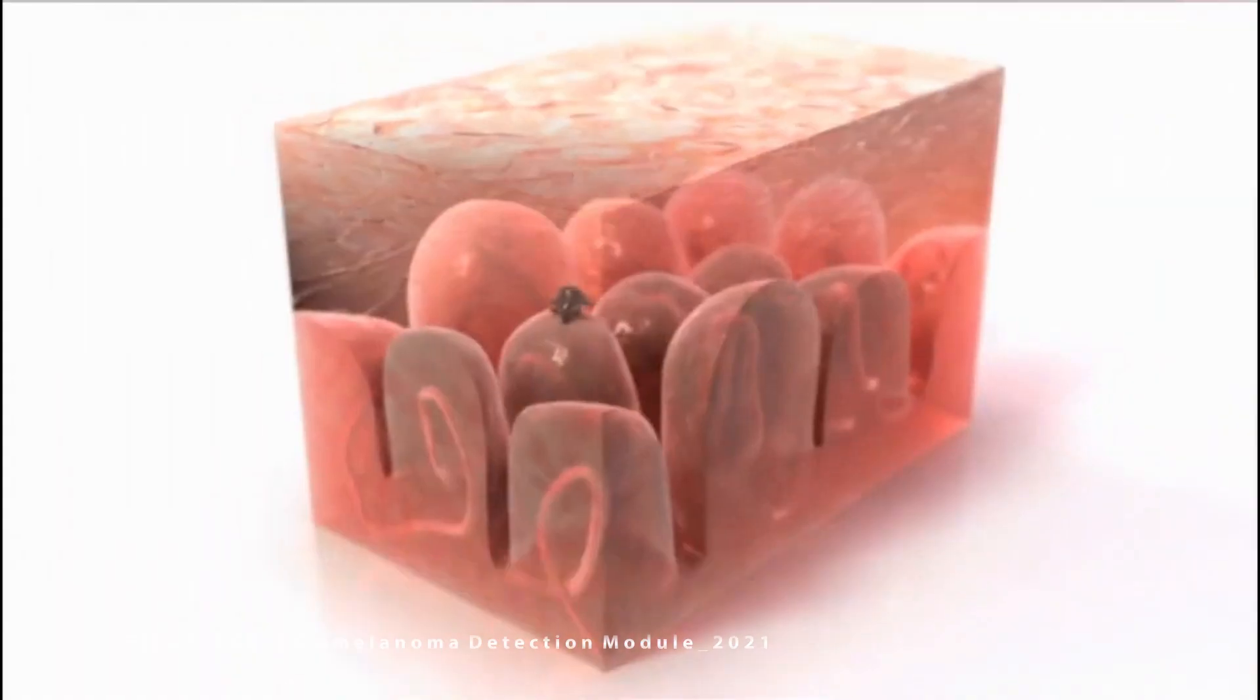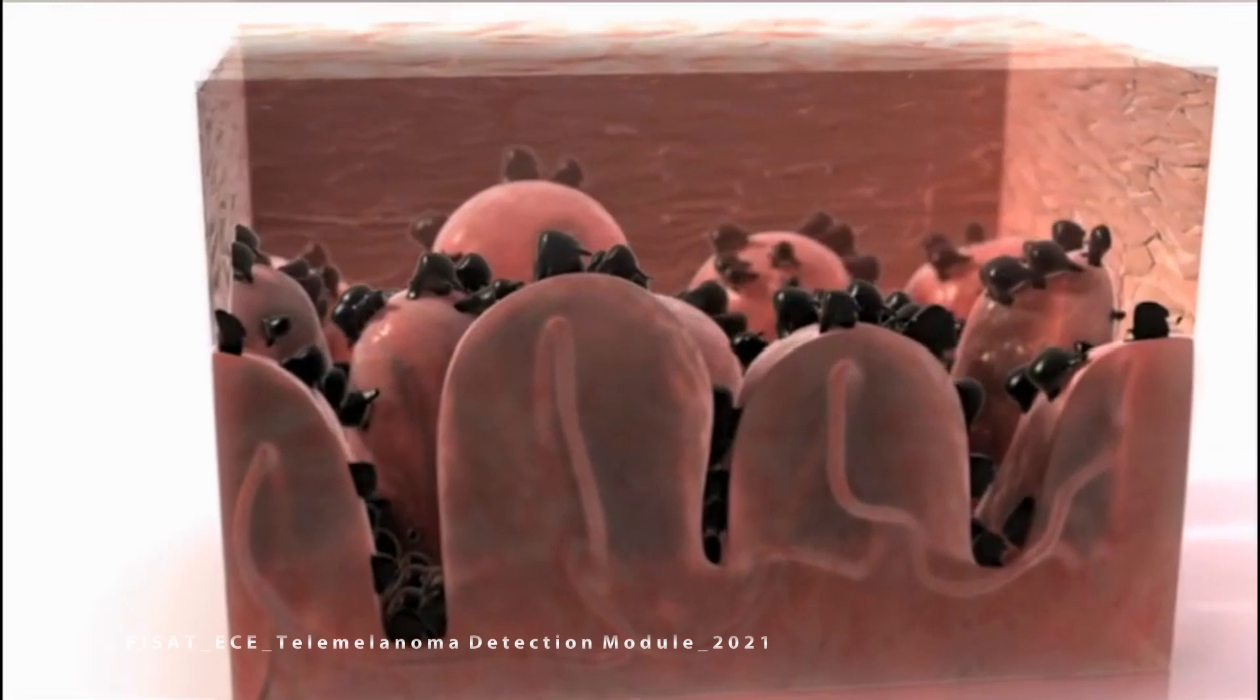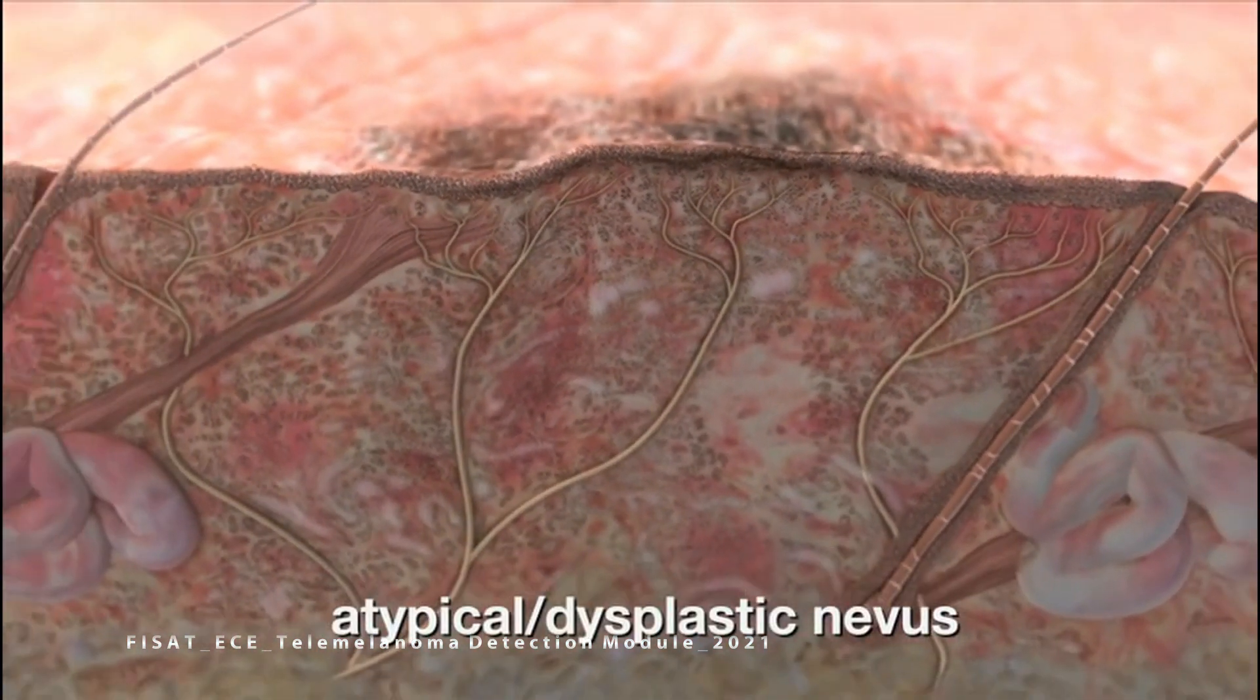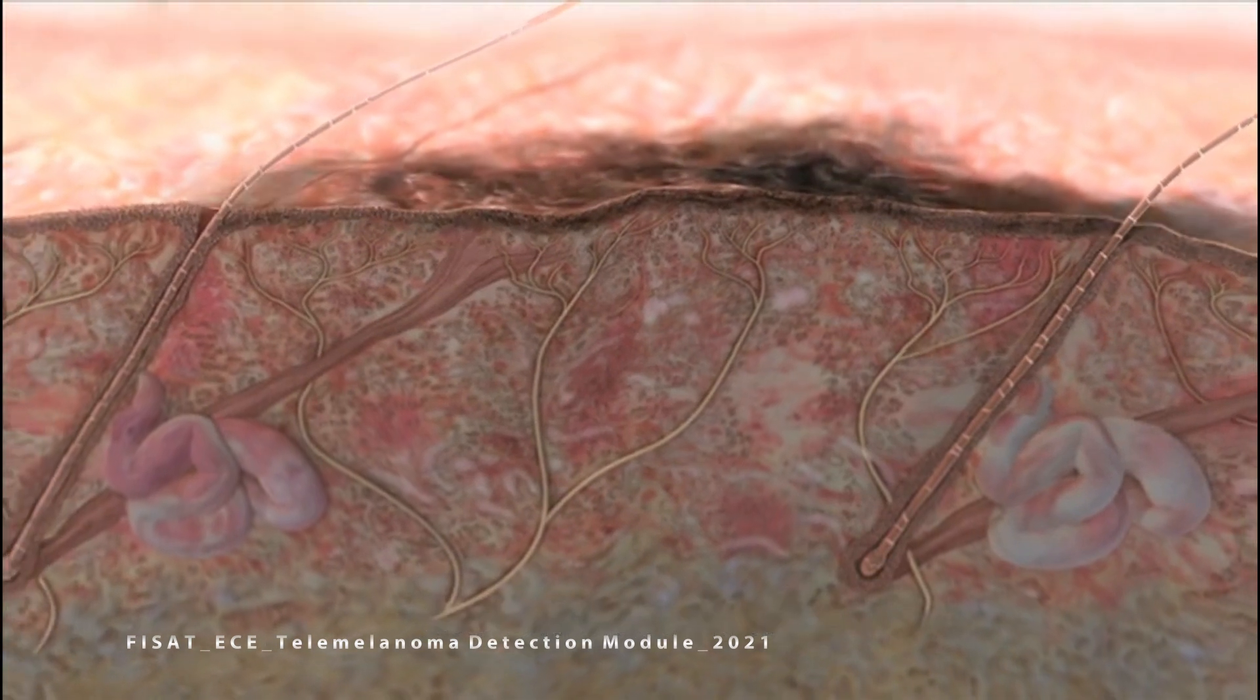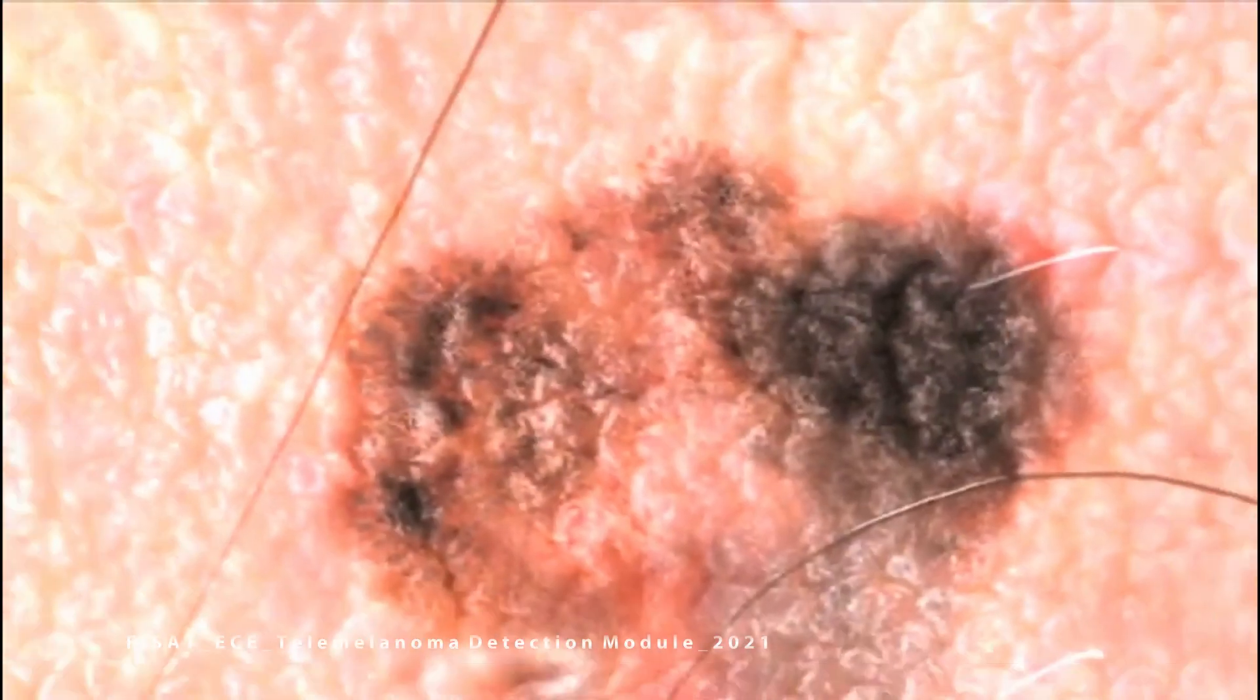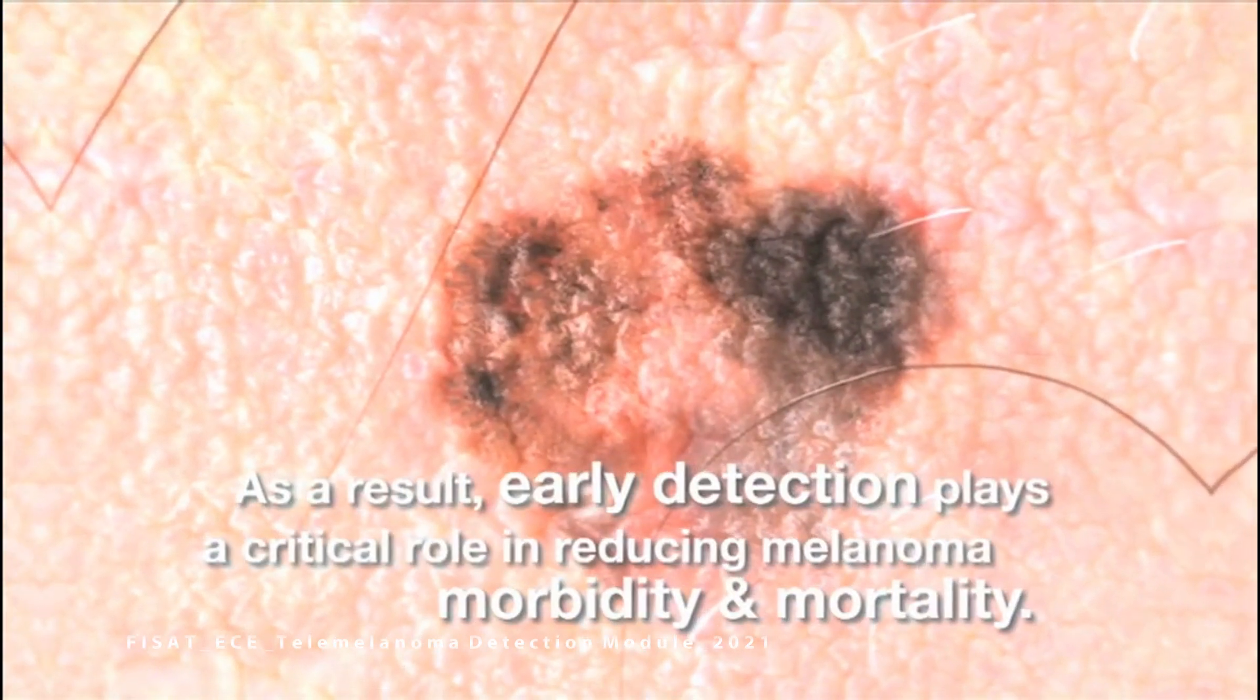UVA radiation damages DNA in human melanocyte cells, causing mutations that can lead to melanoma. Atypical dysplastic nevus, melanoma in situ, and invasive melanoma are intermediates of transition, so early detection of melanoma is important.